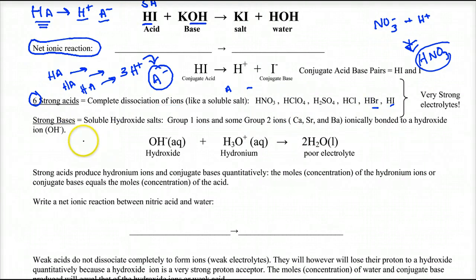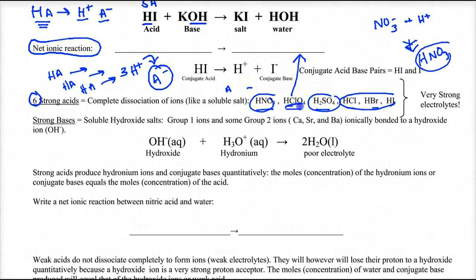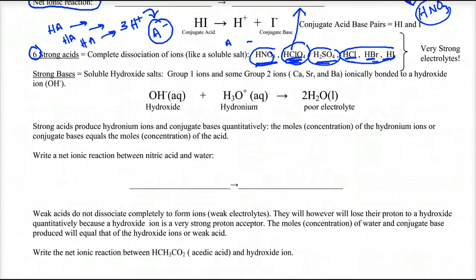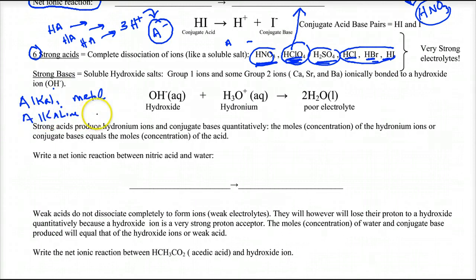Now let's jump down to strong bases. These are easier to remember than the strong acids. Strong bases make a lot of sense when you think about them. Now, strong bases are important because you remember from previous chemistry — you had alkali metals, which are group one ions or metals, and you had alkaline earth metals, which are group two metals.